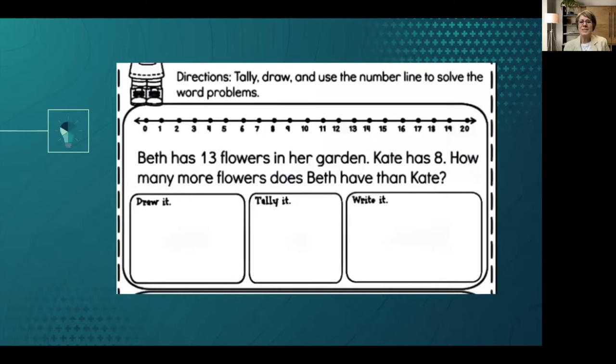So here's an example I took from a first grade problem. Beth has 13 flowers in her garden. Kate has eight. How many more flowers does Beth have than Kate? So that's a typical question you might have. I like the fact that they have a number line and I will point out a couple of things. One, I like that they have arrows on each end and we'll talk more about that.